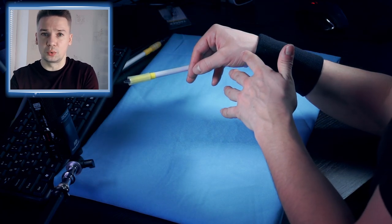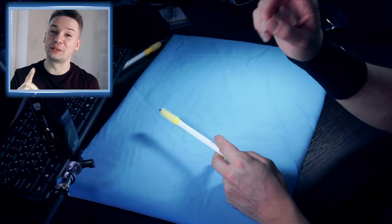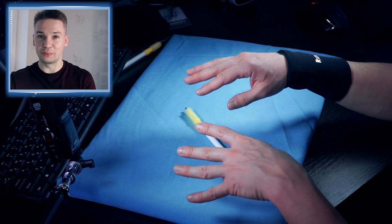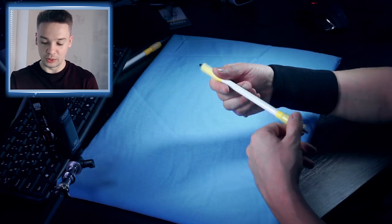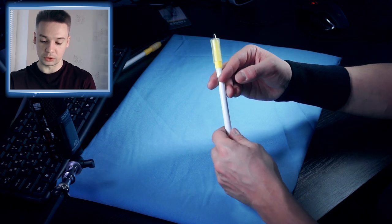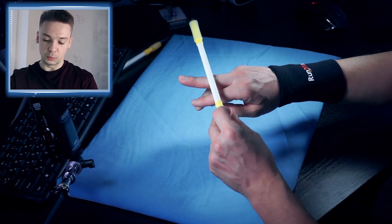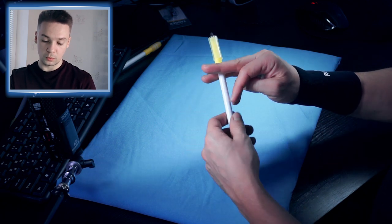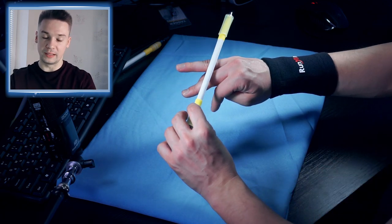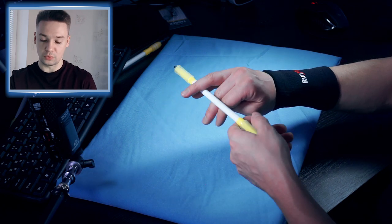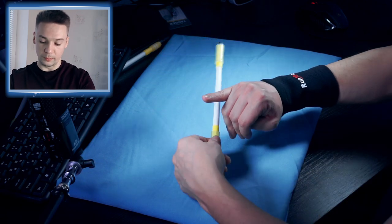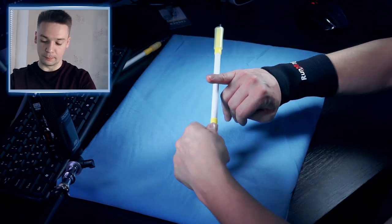You will notice that with each finger your back will become a little bit more of a back around. When you do index back you do it at the flanks approximately. When you do middle it will be about this position. When you do ring it's almost at the base of your finger. And pinky goes on the base of your finger, it's completely back around.